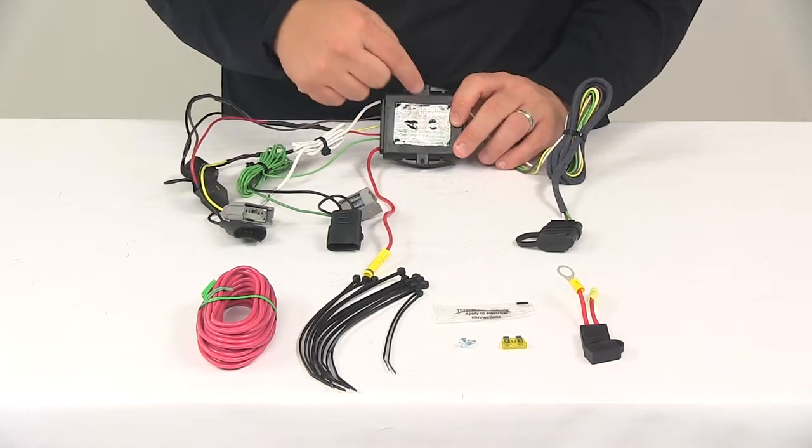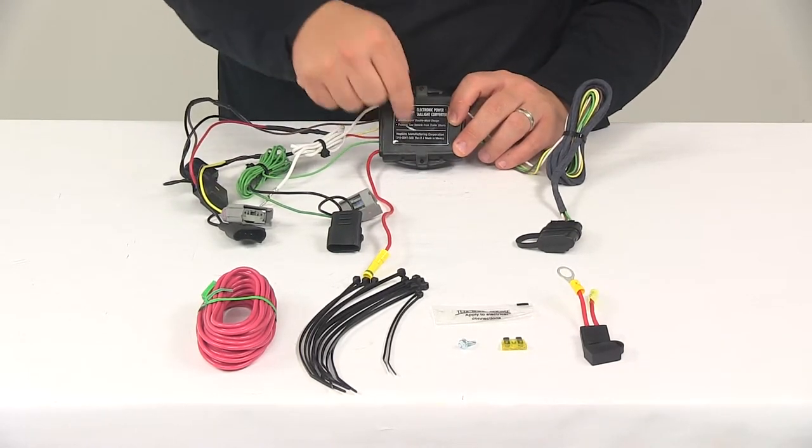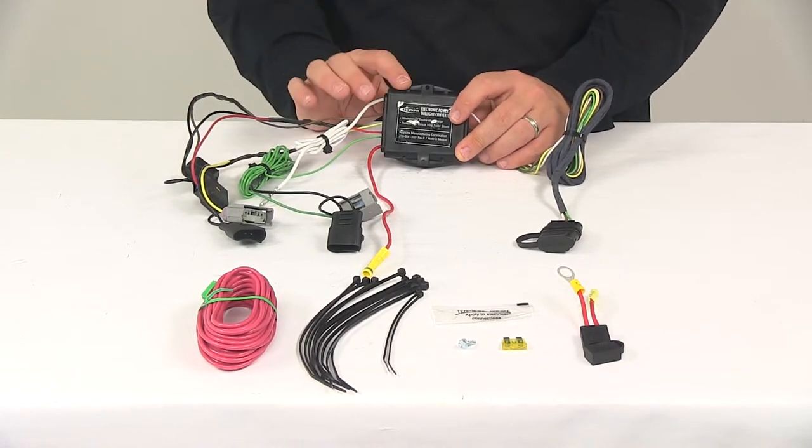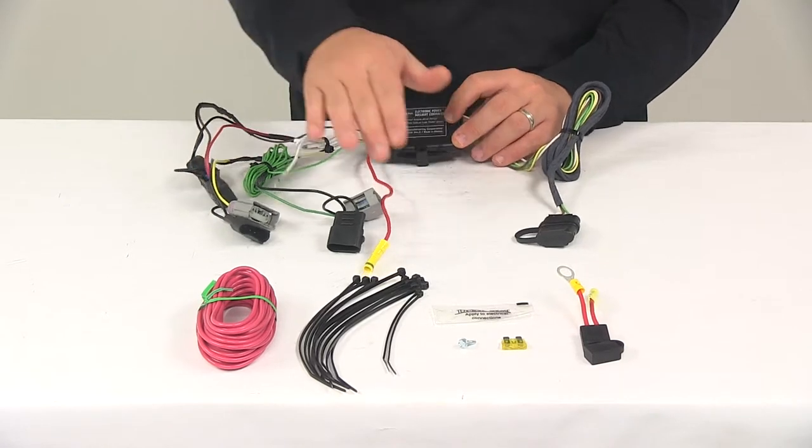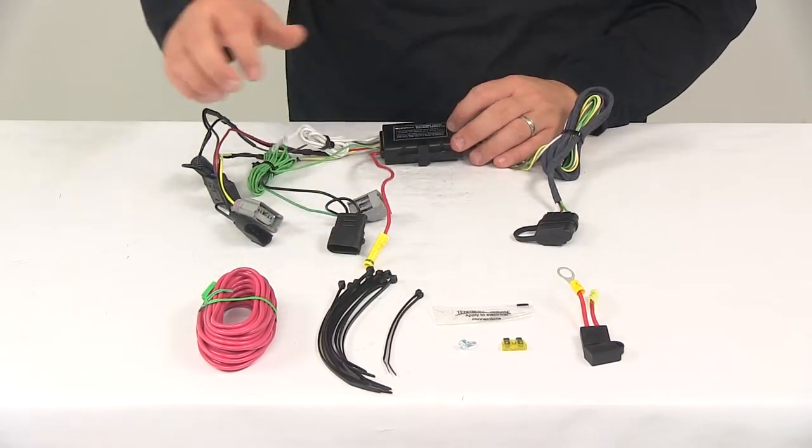And then you'll need to mount the converter box. It's got a couple mounts, one located on each side. That way you can get it secured easily out of the way using the included cable ties provided with the kit.